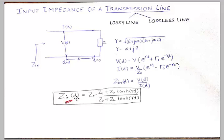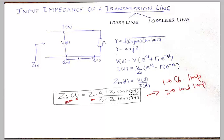The input impedance of a transmission line at a distance D from the load equals Z0 multiplied by (ZL + Z0·tanh(γD)) / (Z0 + ZL·tanh(γD)). Technically, Zin depends upon: (1) the characteristic impedance Z0, (2) the load impedance ZL, (3) the propagation constant gamma — which itself depends on distributed components R, L, G, and C — and (4) the distance D. Varying any of these changes Zin.